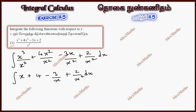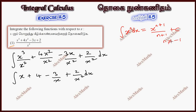This is the basic formula. So, integration of x^n dx is x^(n+1)/(n+1) + C, where n is not equal to minus 1. Okay.